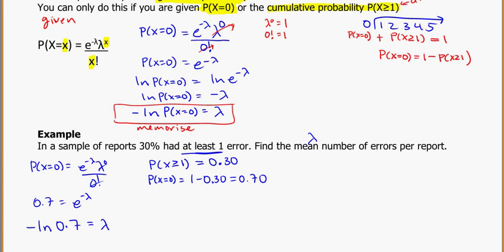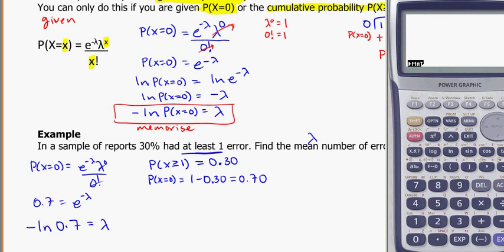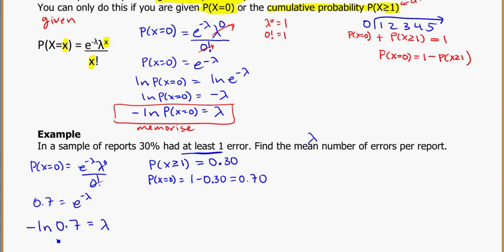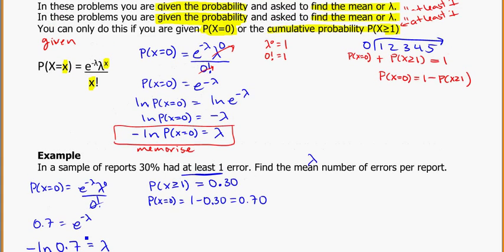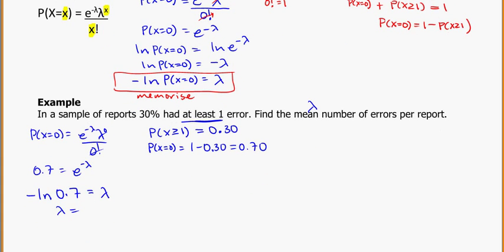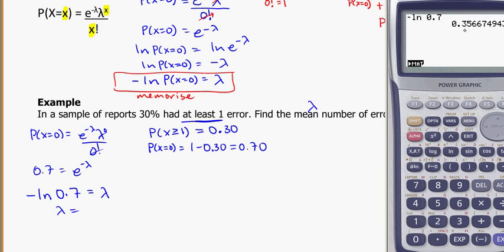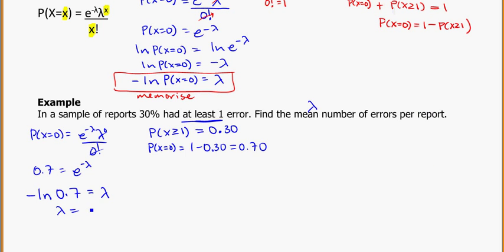And again, taking the ln of both sides and rearranging, we're going to end up using negative ln of 0.7, my probability, is equal to lambda. And if we plug that into our calculator, again the ln key is here, so we're going to say minus ln 0.7 is equal to that. So that means to me my lambda, lambda will be equal to 0.3567.